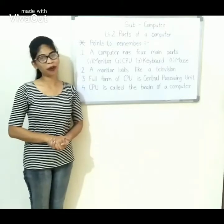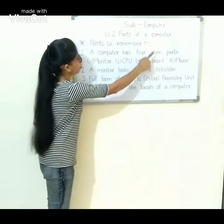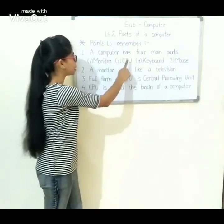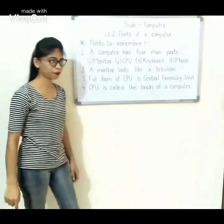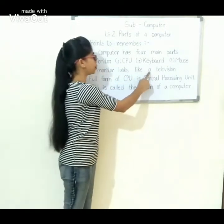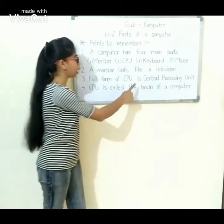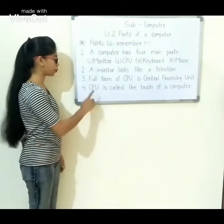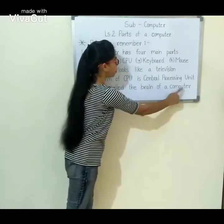Now let's remember. First, a computer has four main parts: Monitor, CPU, Keyboard, and Mouse. Second, a monitor looks like a television. Third, the full form of CPU is Central Processing Unit. Fourth, the CPU is called the brain of a computer.